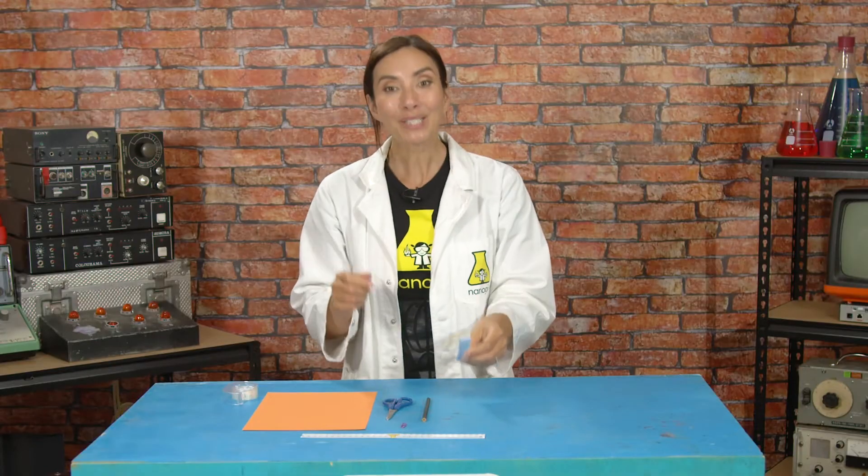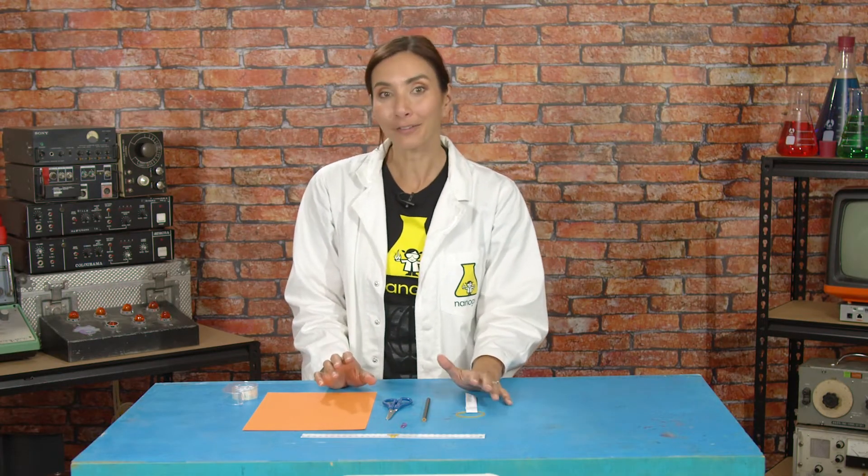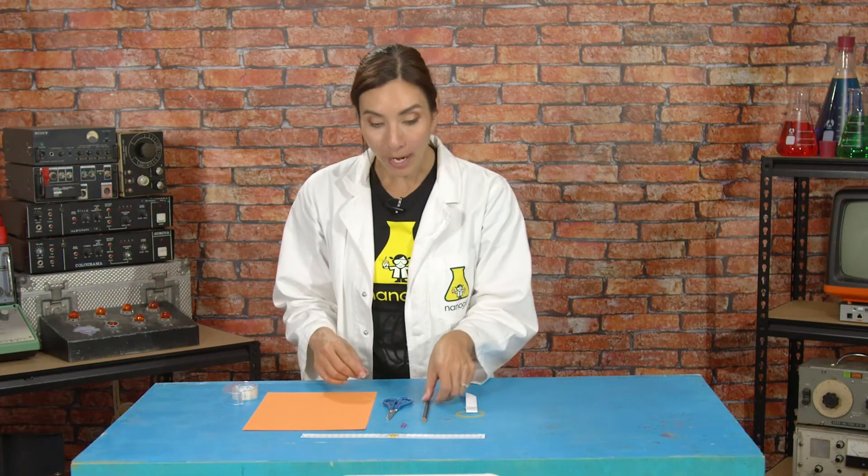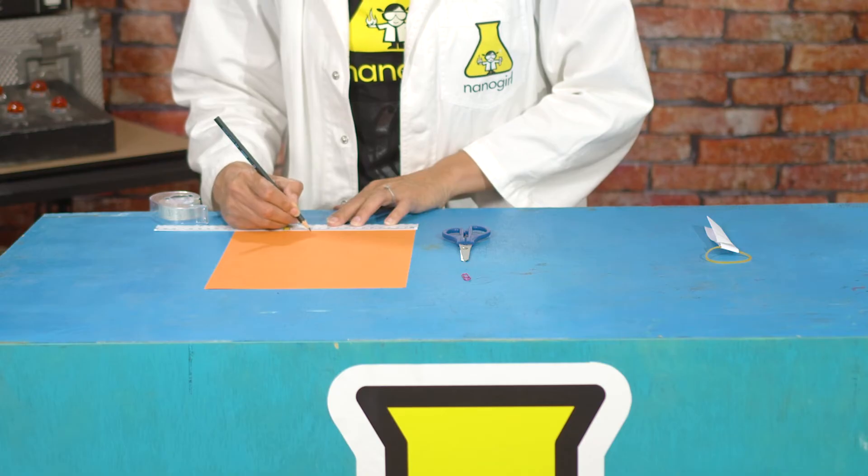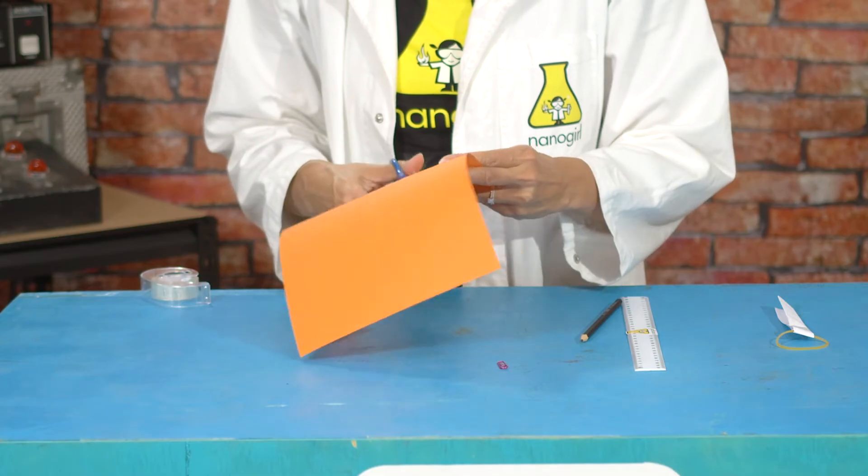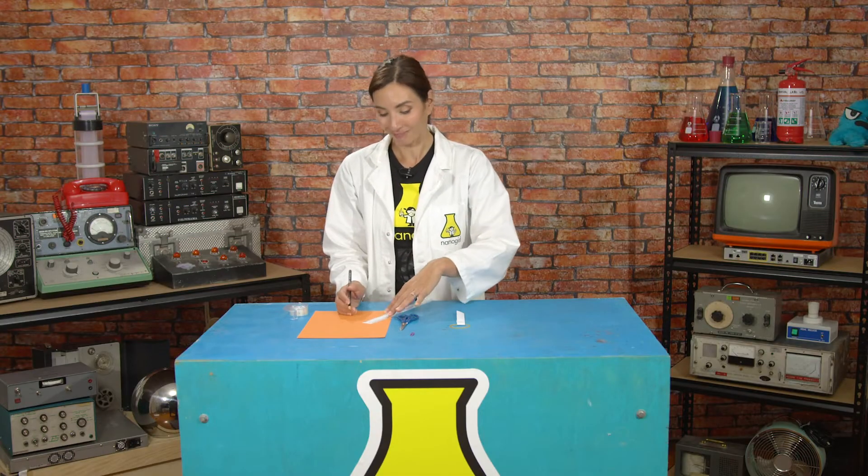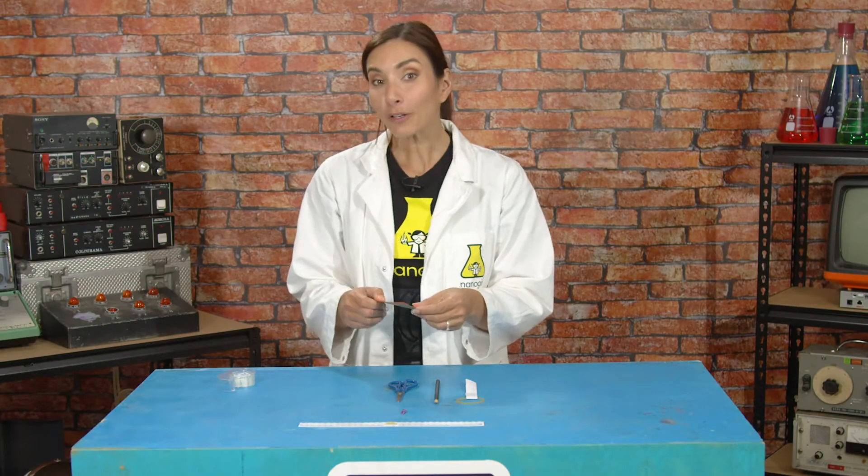Next we've got to make the plane shape. So put the catapult to one side for now and take your piece of card. You want to draw a triangle on your piece of card where each side of the triangle should be the same with a length of about 12 centimeters. Now a triangle that has all of the sides the same is called an equilateral triangle - quite like that word, equilateral.